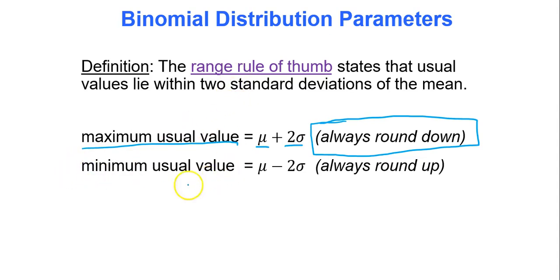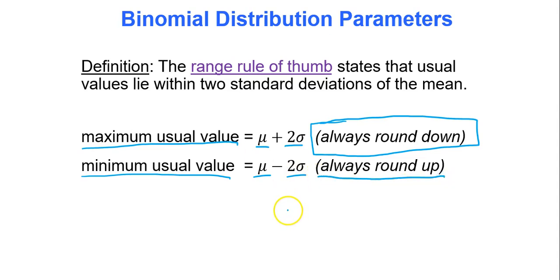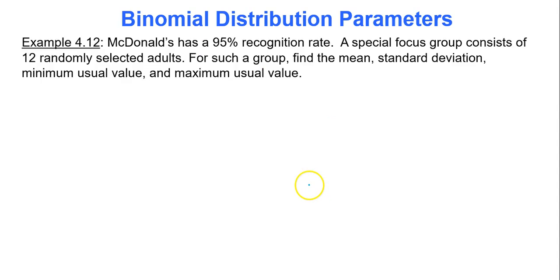The minimum usual value is the mean minus 2 times the standard deviation. You always round this value up. So if you get a minimum usual value of 7.2, that means 7 is far too low — 8 is the first actual possible value that could be considered usual. So keep those rounding rules in mind: round the minimum up, round the maximum down.